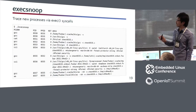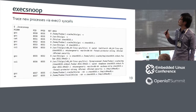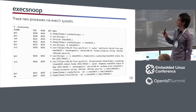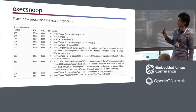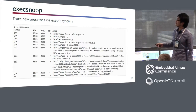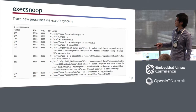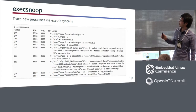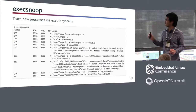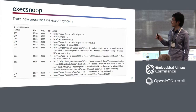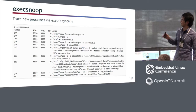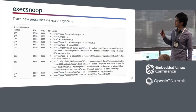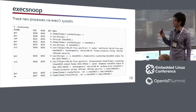ExecSnoop traces new processes via exec syscalls, similar to OpenSnoop. This example also shows some build process. It is useful for analyzing short-lived processes like this — you can easily find out which command execution failed.